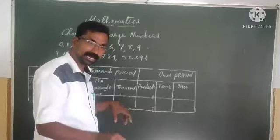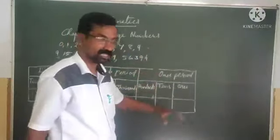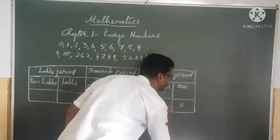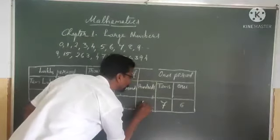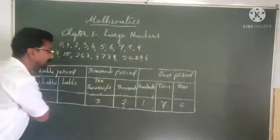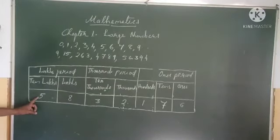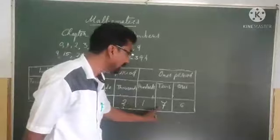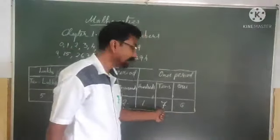This chapter we studied till lakh period only. Now if you place in each places, if you write in each place numbers begin. Suppose 6 in ones place, 7 in tens place, 1 in hundreds place, 2 in thousands place, 3 in ten thousands place, 8 in lakhs place, 5 in ten lakhs place. Then this number is read as 58 lakhs 32,176.